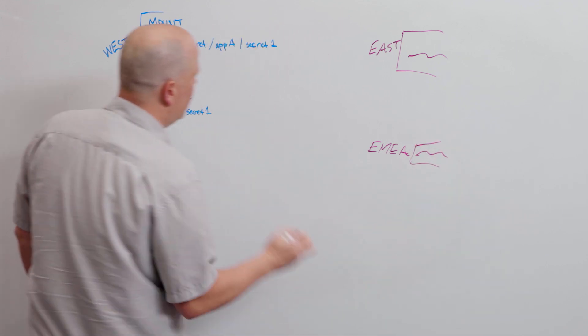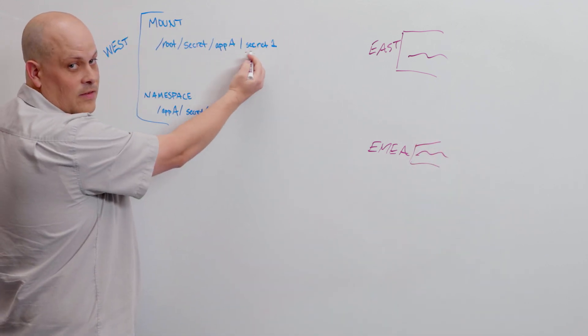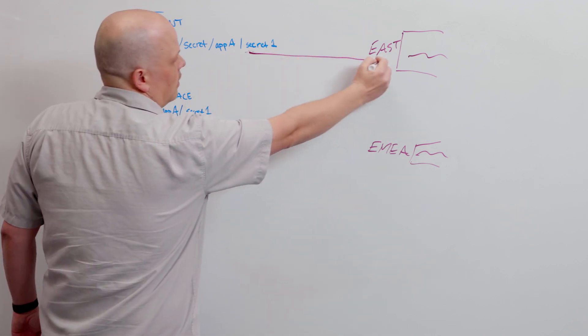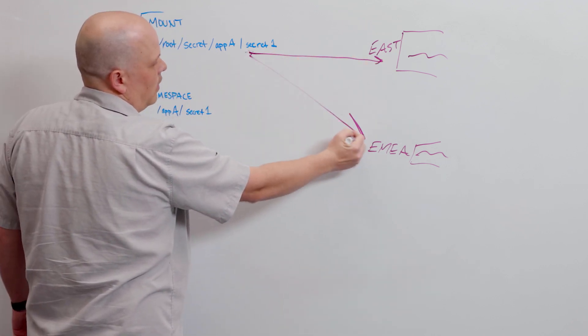With replication, we can essentially take this secret value and we can make a copy of it here and make a copy of it here.